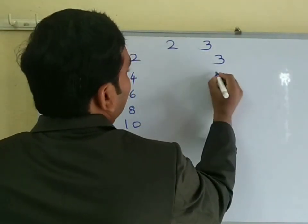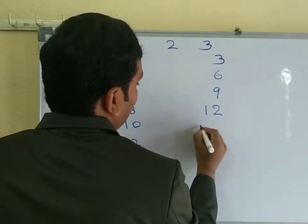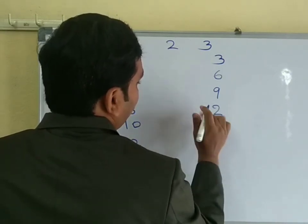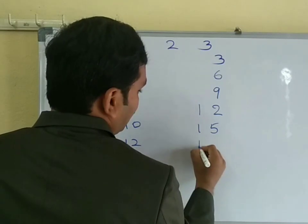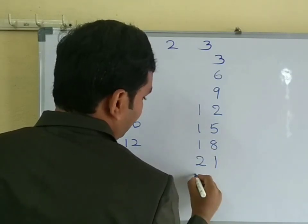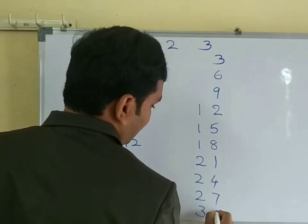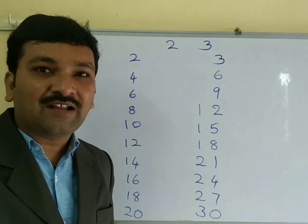And this side 3, 6, 9, 12, 15, 18, 21, 24, 27, 30. The same rule I am going to apply.